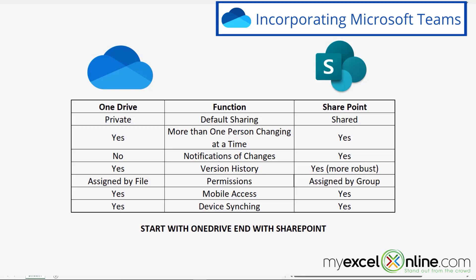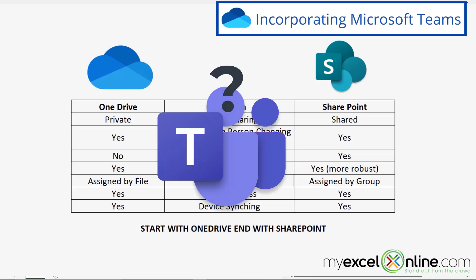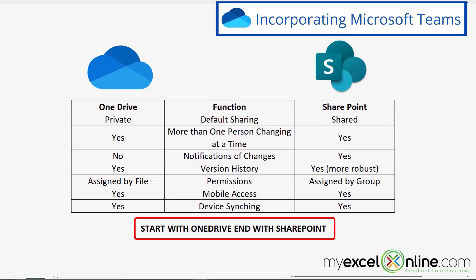Another question that arises is: what about Microsoft Teams? Microsoft Teams would be more on the side of SharePoint. When using Teams and its files, it's pretty much just like SharePoint — everyone on the team has access and you can make concurrent changes, similar to how Google Docs works. So I would put Microsoft Teams in the same category as SharePoint. Just think of it as: start in OneDrive, end in SharePoint or Teams.